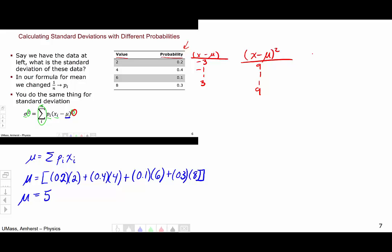Now we want to multiply each value of x minus mu squared by the probability. So I'm going to add yet another column, probability times x minus mu squared. For the first one, I'm going to multiply 9 by the probability of 0.2 to get a quantity of 1.8.